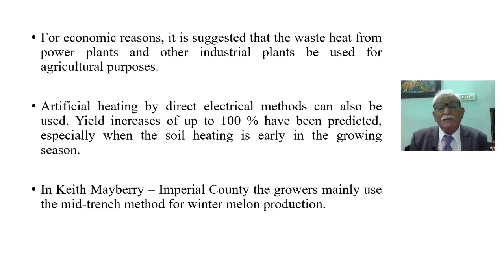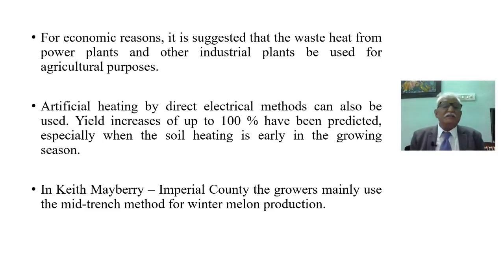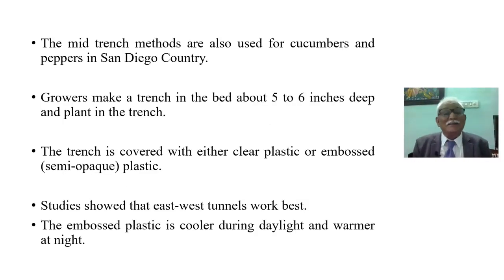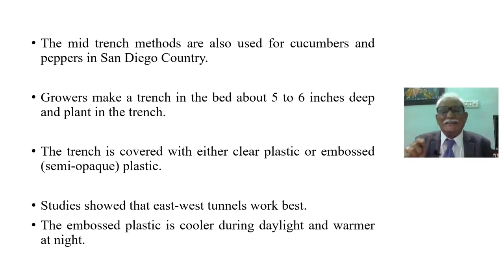In an imperial county, growers mainly use the mid-trench method for winter melon production. This method is also used for cucumbers and peppers. In this approach, growers make a trench in the bed about five to six inches deep and plant in the trench. The trench is covered with either clear plastic, embossed plastic, or opaque semi-opaque plastic.